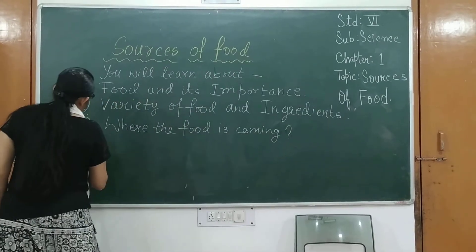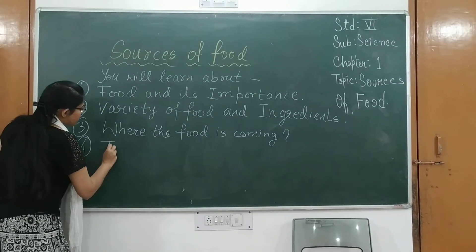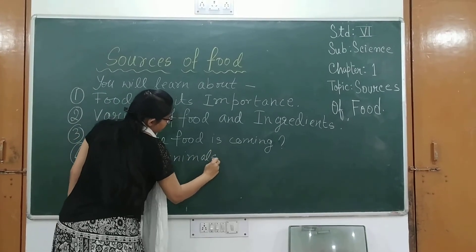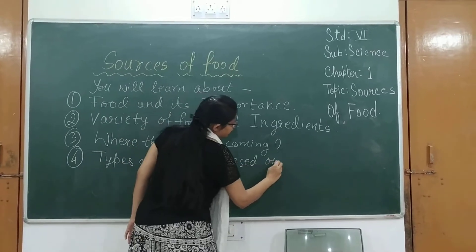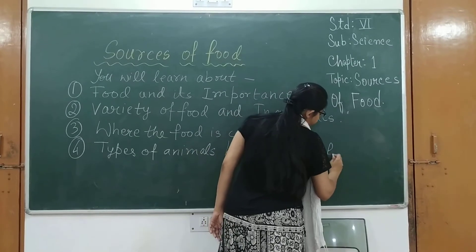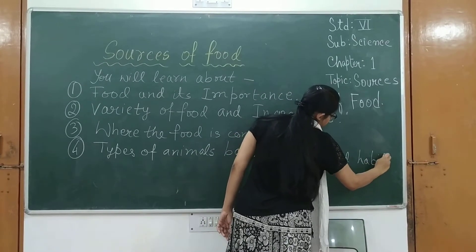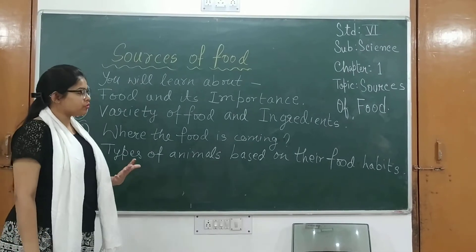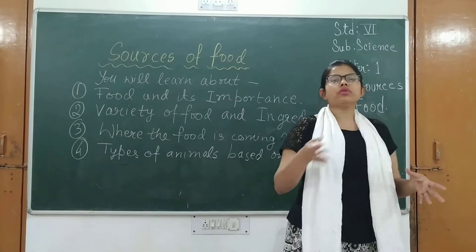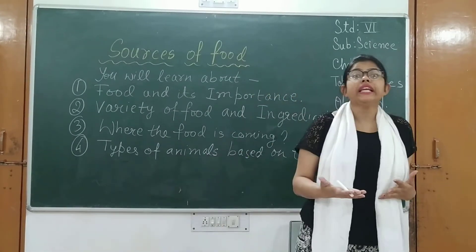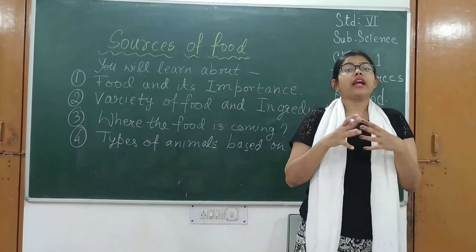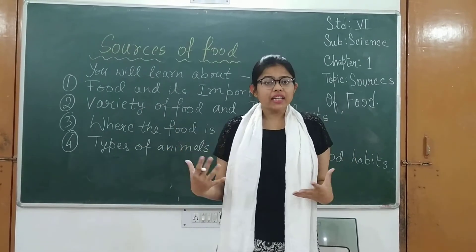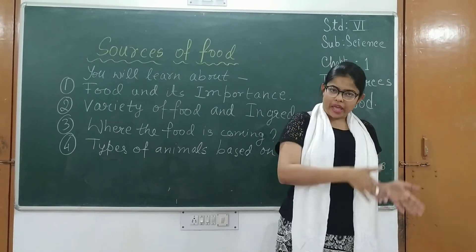The fourth topic which we will be learning in this chapter is the types of animals based on their food habits. Animals are divided into certain categories based on the type of food they eat. There are some animals which eat only plants, some which eat only animals or non-veg kind of things, and some animals which eat both animals as well as plants.